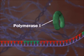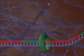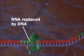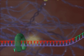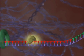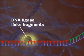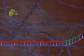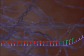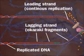DNA polymerase 1 replaces the RNA primers with DNA. Finally, DNA ligase links the Okazaki fragments into a single strand.